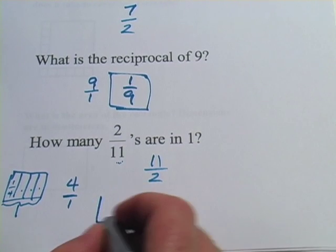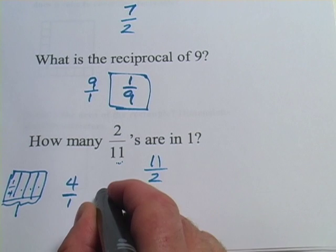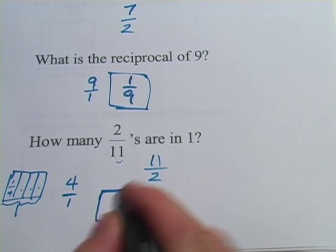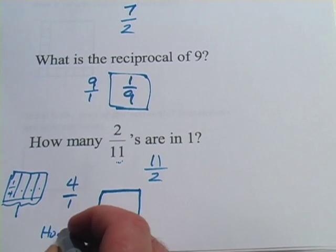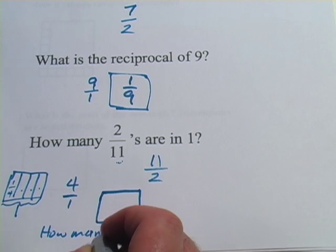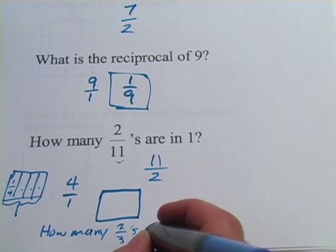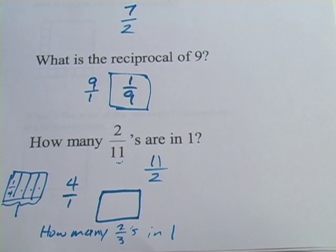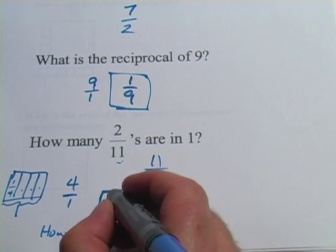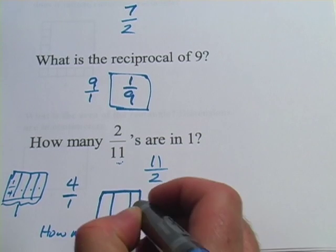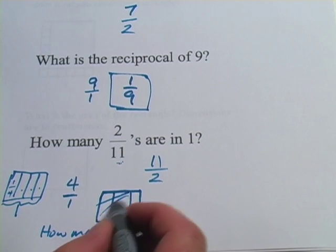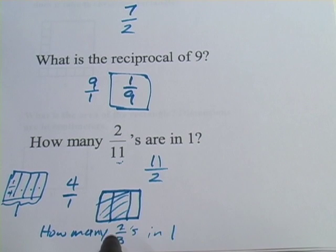And I can maybe show you how that's true with something slightly more difficult than the 1 quarter. This problem would be how many 2 thirds in 1. That's our question. Well, if we divide this up into thirds, and we have 2 of them shaded in, that's 2 thirds.